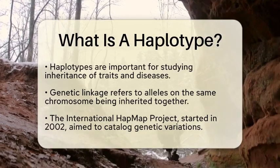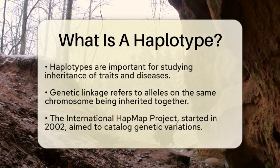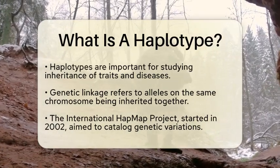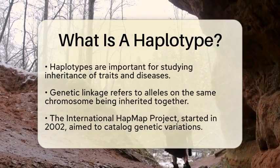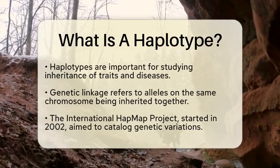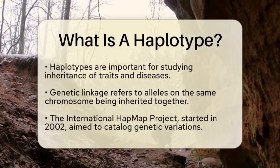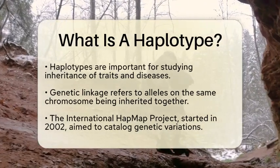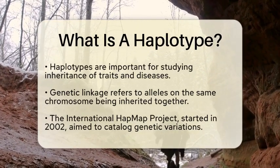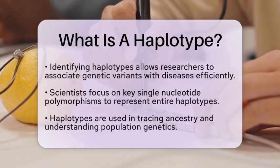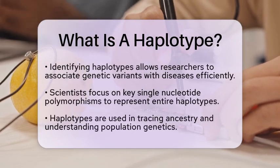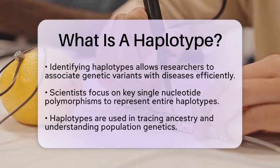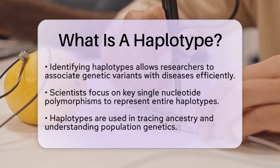In the context of mapping the human genome, haplotypes have been incredibly important. The International HapMap Project, which began in 2002, aimed to catalog these genetic variations across different populations. By identifying haplotypes, researchers can associate specific genetic variants with diseases more efficiently. Instead of analyzing every single variation, scientists can focus on a few key single nucleotide polymorphisms that represent an entire haplotype, revealing multiple genetic factors related to a particular trait or disease risk.